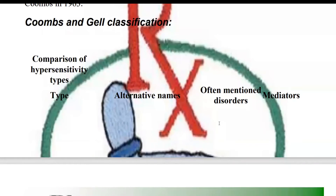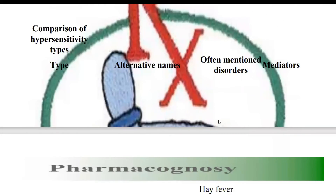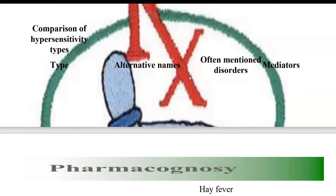Type 1 has the name allergy or immediate hypersensitivity. Mediators are factors that neutralize your antigen or causative agents - you can say they mediate the response or neutralize the effect. These mediators are also called antibodies, anti-bodies, or immunoglobulins.